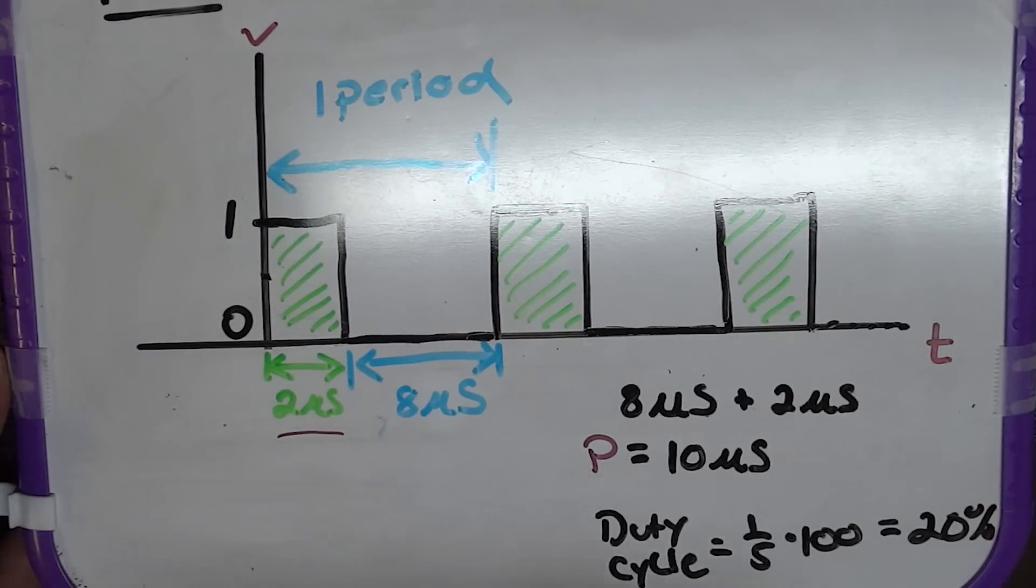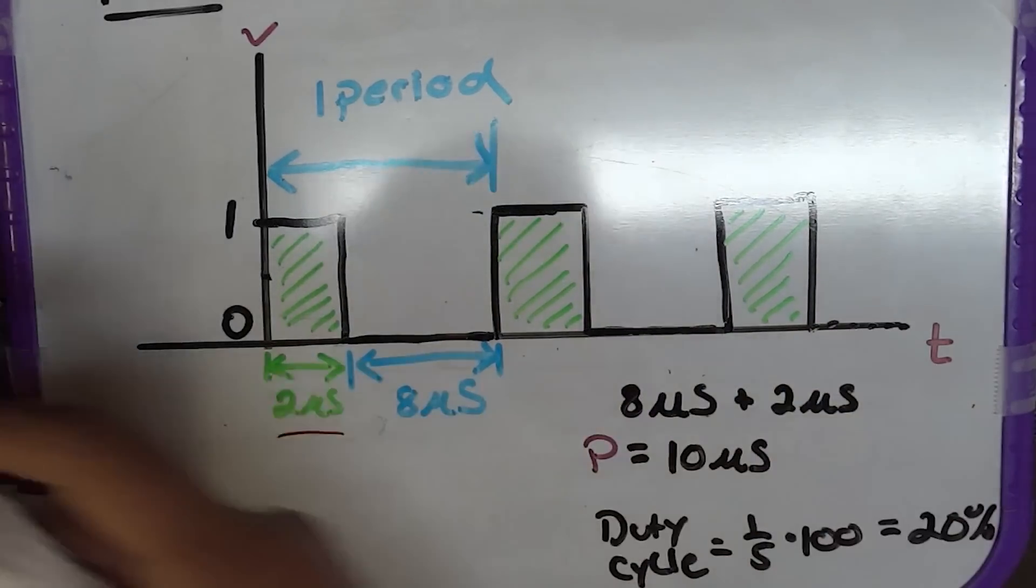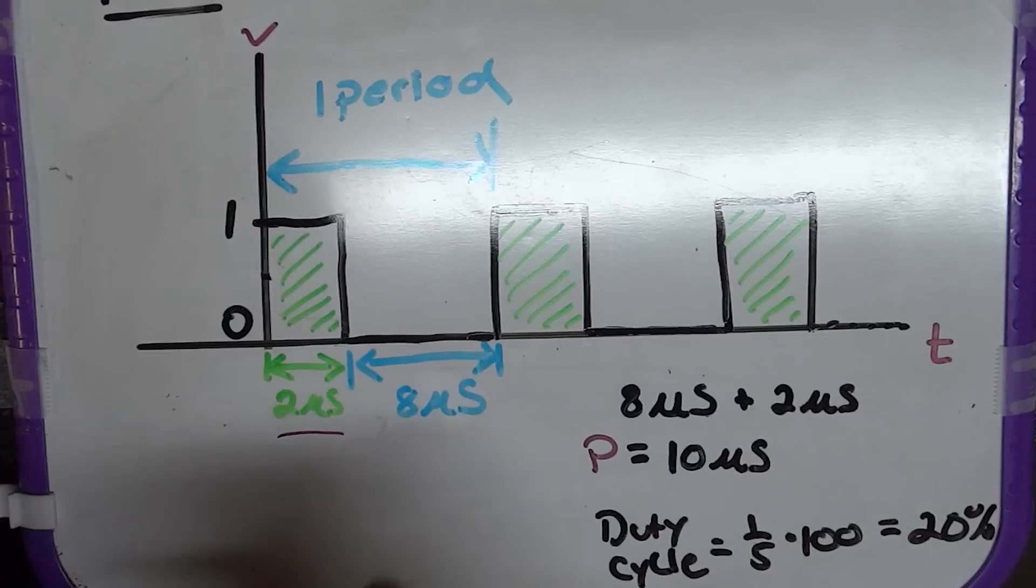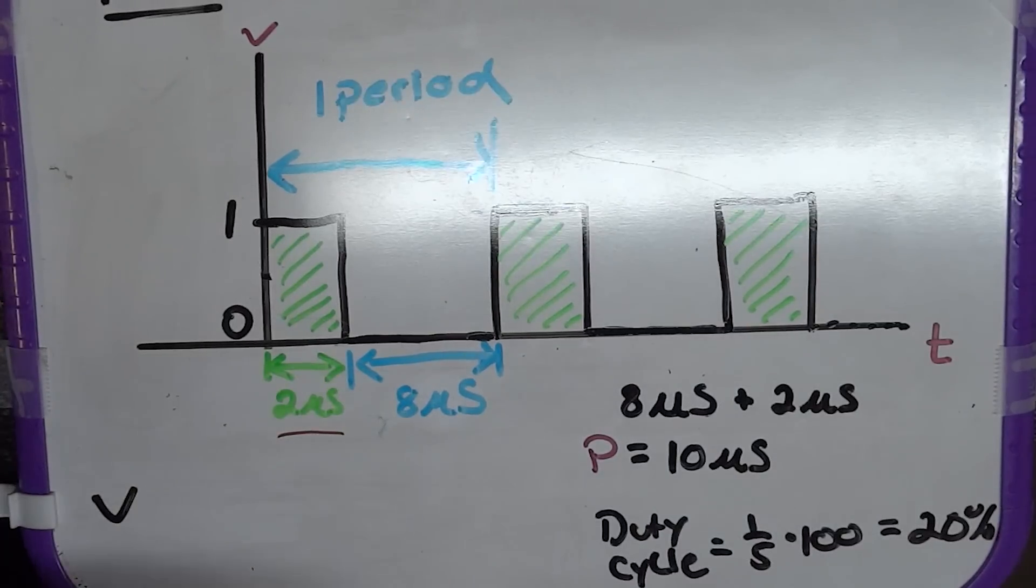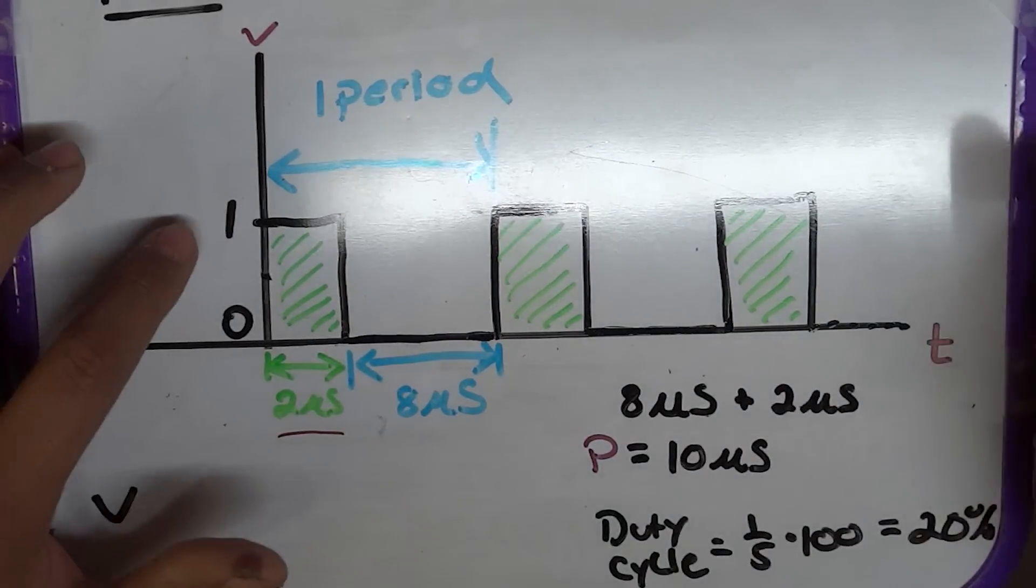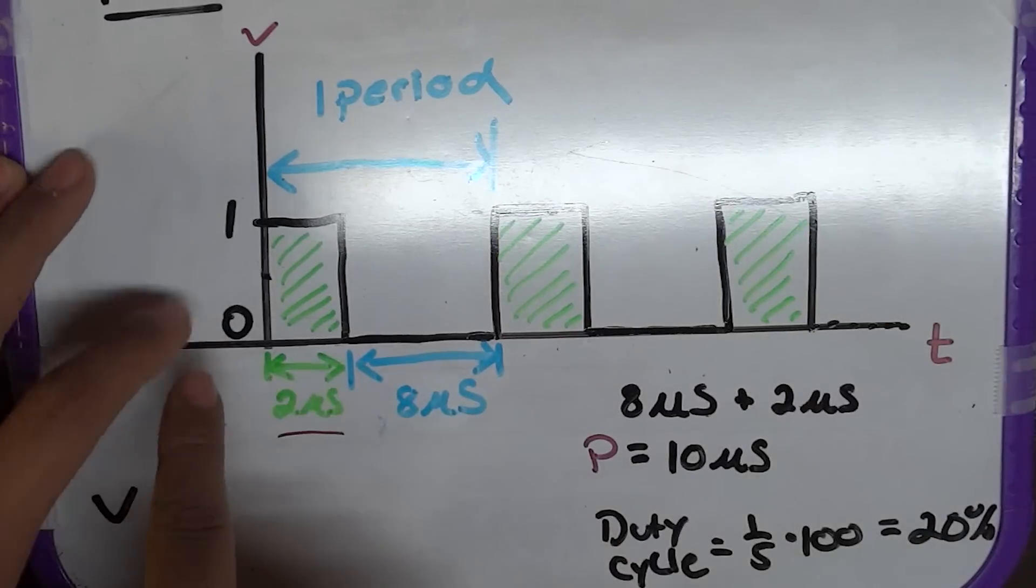Well, if you know the duty cycle as a percentage, you could multiply that by the voltage. So, now let's solve for voltage. So, as you can see, you have 1 volt and 0 volts.